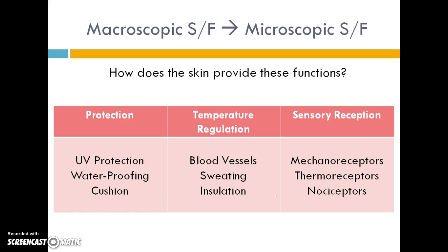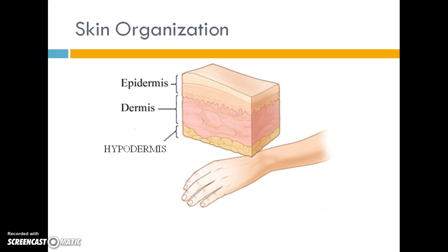To recap, we just went through the macroscopic structures and functions — protection, temperature regulation, and sensory reception — and now we're going to break those down into their microscopic components, focusing on protection first and looking at each microscopic level.